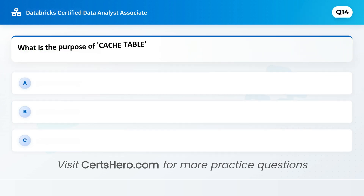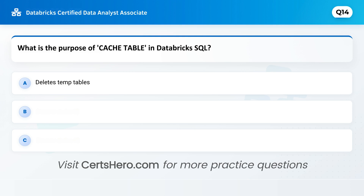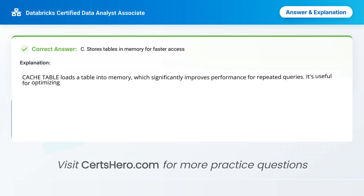Here's a tricky one. What is the purpose of Cache Table in Databricks SQL? A. Deletes temp tables. B. Persists tables to disk. C. Stores tables in memory for faster access. Correct answer is C: stores tables in memory for faster access. Cache Table loads a table into memory, which significantly improves performance for repeated queries. It's useful for optimising dashboard load times and exploratory analysis.